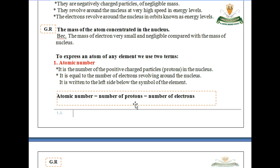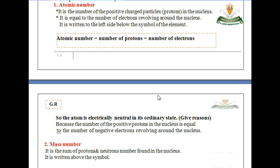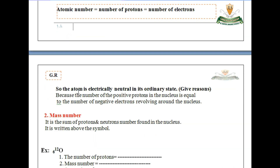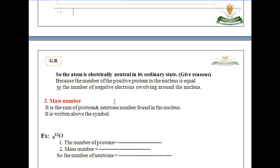The atomic number equals the number of protons, which also equals the number of electrons. The atom is electrically neutral in its ordinary state. The reason is that the number of positive protons in the nucleus is equal to the number of negative electrons revolving around the nucleus.